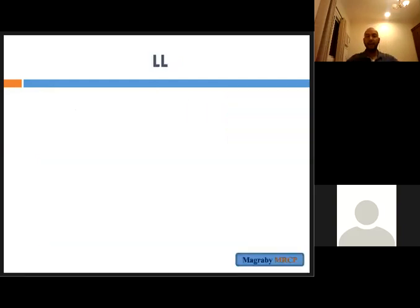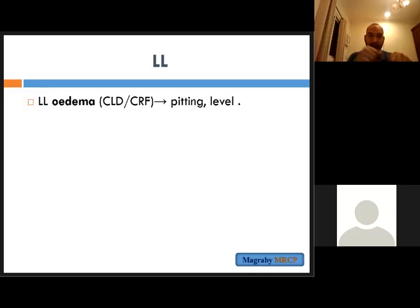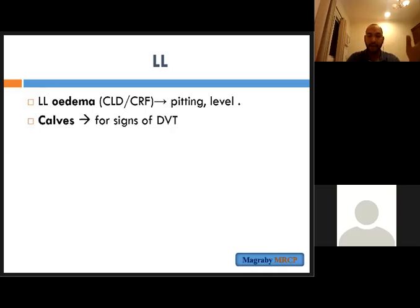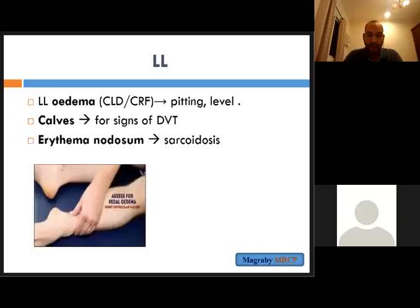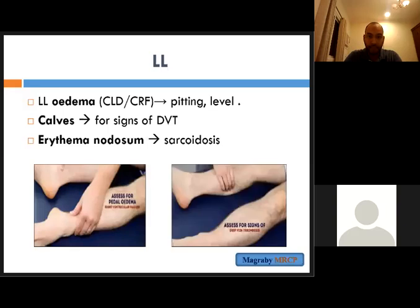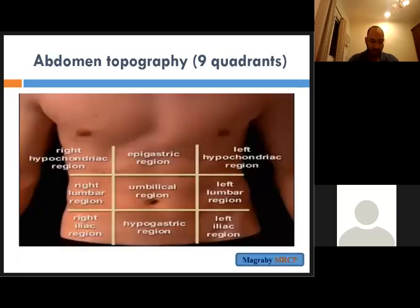After finishing the face, go to the lower limb — check if there is any lower limb edema, do the test for edema to know if it is present and at what level. While pressing, be gentle and look at the patient's eyes. Also check the calf for DVT and look for erythema nodosum as a sign of sarcoidosis.